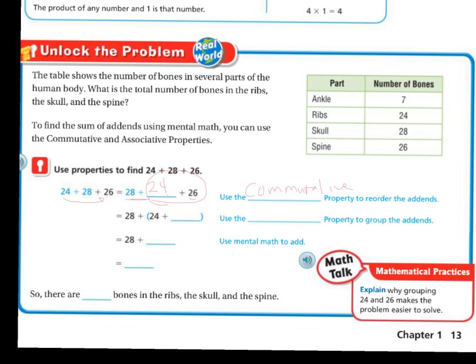Now if I want to use the associative property, then I'm going to put my 26 here because I'm going to group, like I said, the 24 and the 26 and I know that's going to be 50 because 6 and 4 is 10.